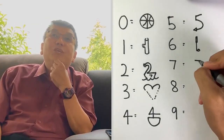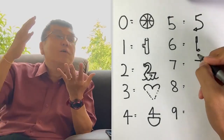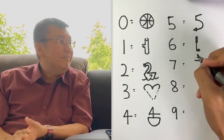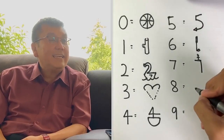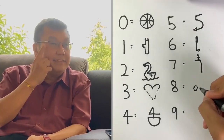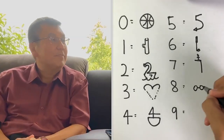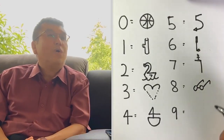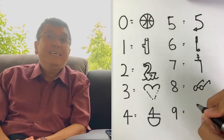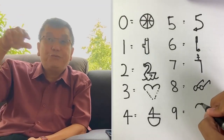And a 7 — you are pretending that you are on top of a cliff. And an 8 is the glasses. And the last one, the 9, is like a tree.